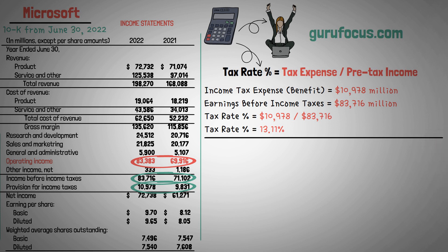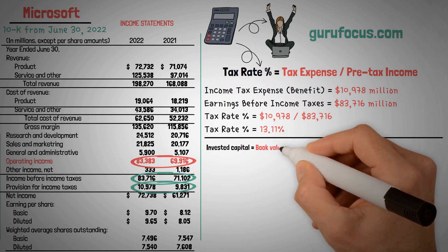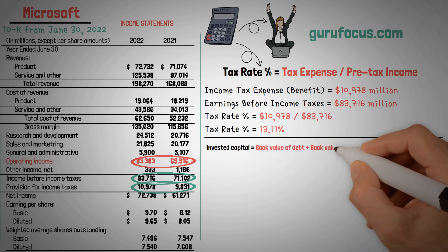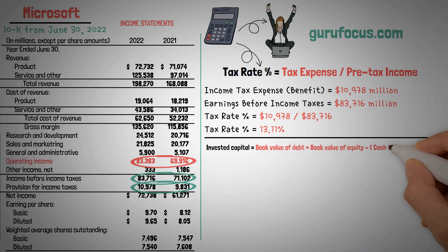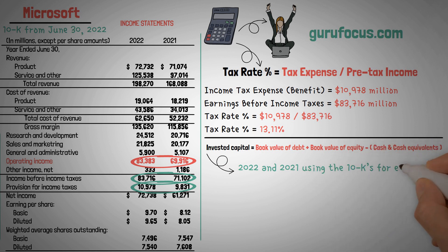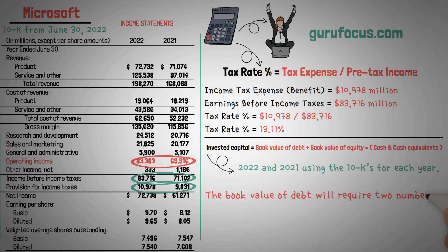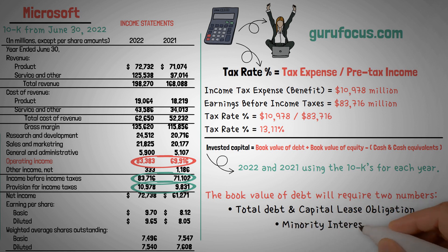Now we need to determine our average invested capital. The formula is: invested capital equals book value of debt plus book value of equity minus cash and cash equivalents. We do this calculation for the end of both 2022 and 2021, using the 10-Ks for each year. The book value of debt will require two numbers: total debt, capital lease obligation, and minority interest.